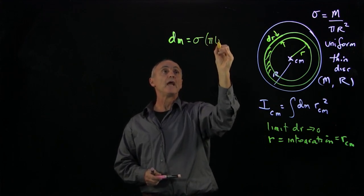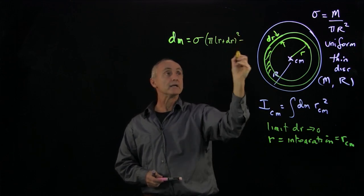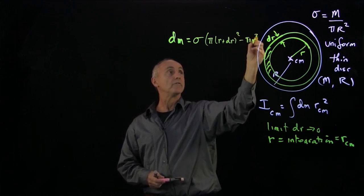Times the area of the outer ring minus the area of the inner ring.